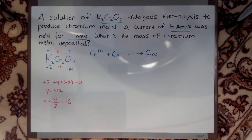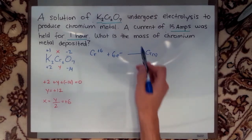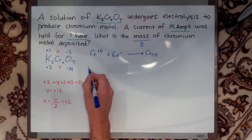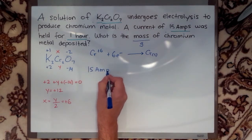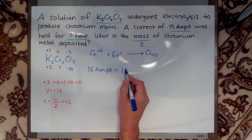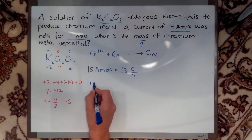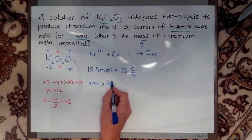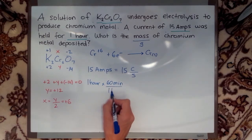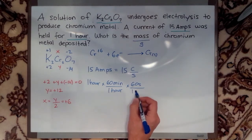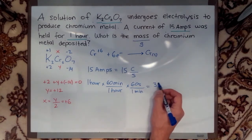Now all I have left to do is take my 15 amps and my one hour and I have to convert that into my mass. What's the unit for mass? Grams. So let's try and do that. We'll start by saying 15 amps is equal to 15 coulombs per second. Well, I know that I can convert my hours into seconds. So one hour times 60 minutes per one hour times 60 seconds per one minute equals 3600 seconds.